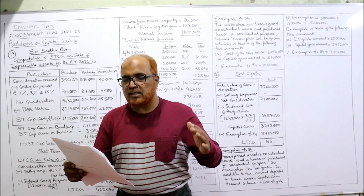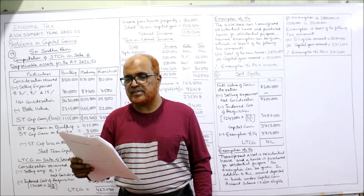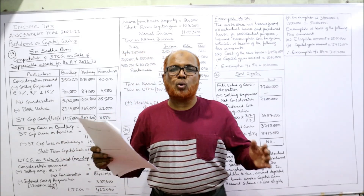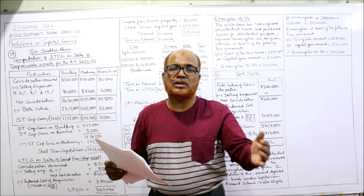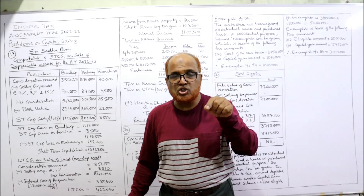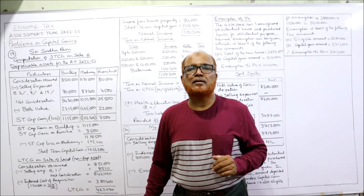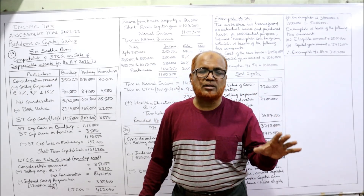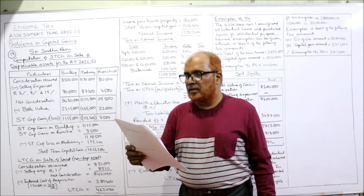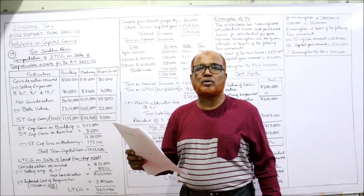He sold all the assets during the previous year. Calculate capital gain and tax liability if his income from house property is ₹84,000. The Income Tax Act says if an asset is a depreciable asset used in the business and sold, the gain arising will always be short-term capital gain, irrespective of the period of holding.